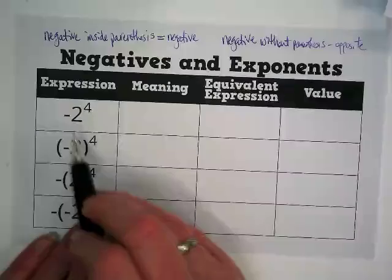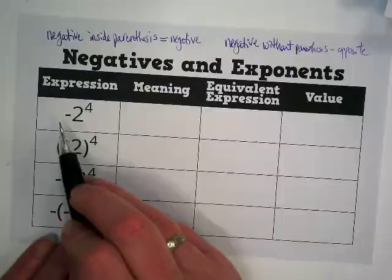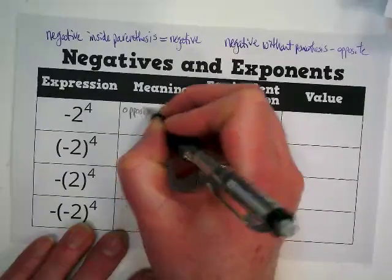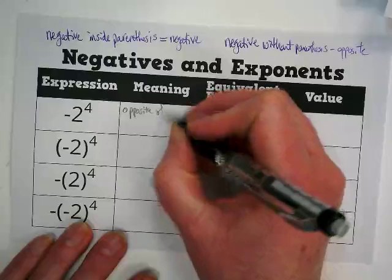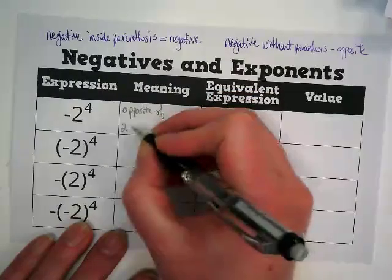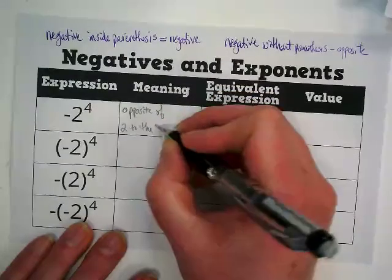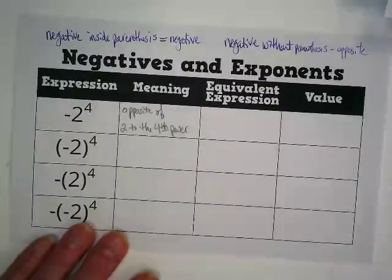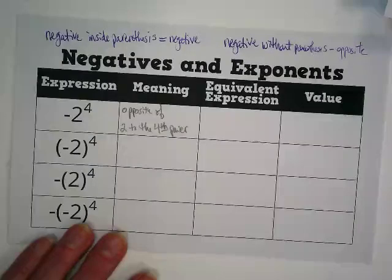Okay, so this is outside of the parentheses. That negative in front of it means opposite. It's the opposite of 2 to the 4th power. I'm happy to see most of you taking notes along with me.